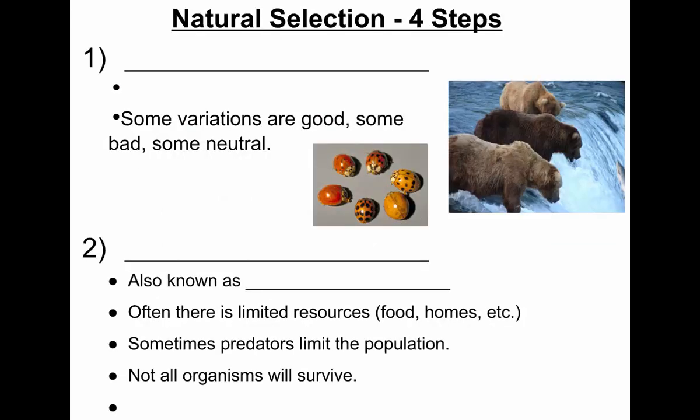Would it be better for them not to reproduce? No, because if they don't reproduce they don't pass on their genes to the next generation. If they're not well-adapted, they just don't pass on those genes. When we talk about natural selection, we say there are sort of four steps to it.